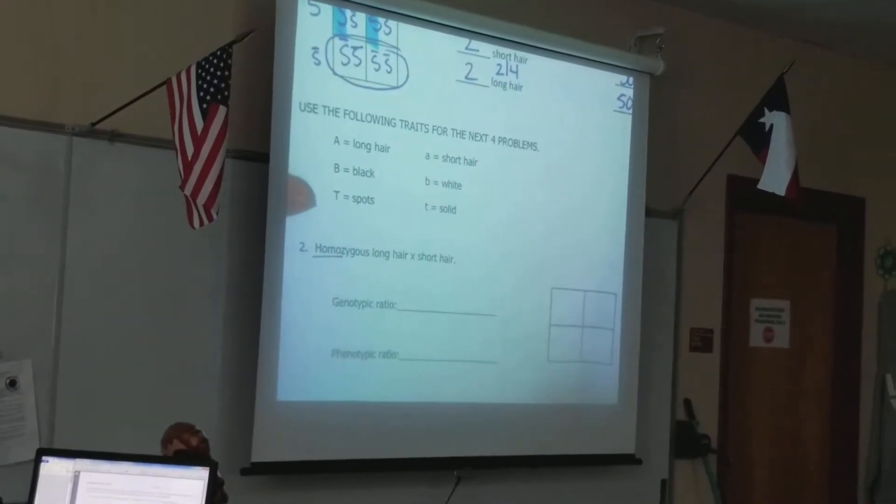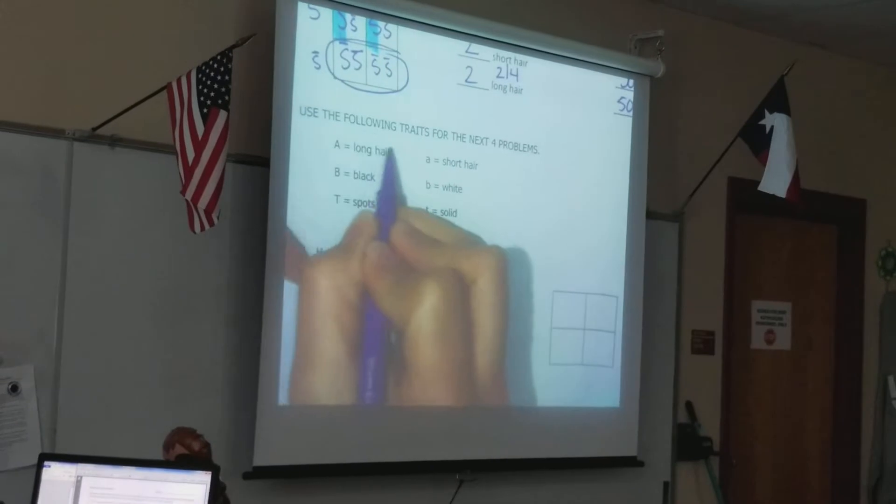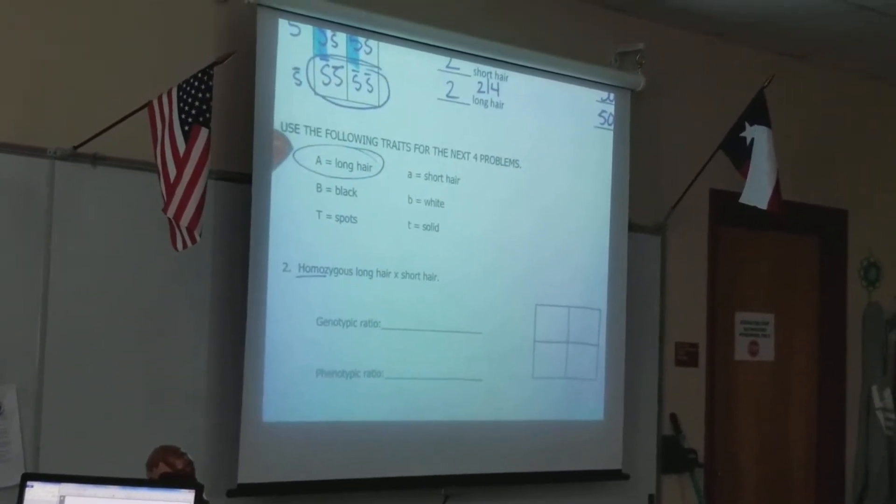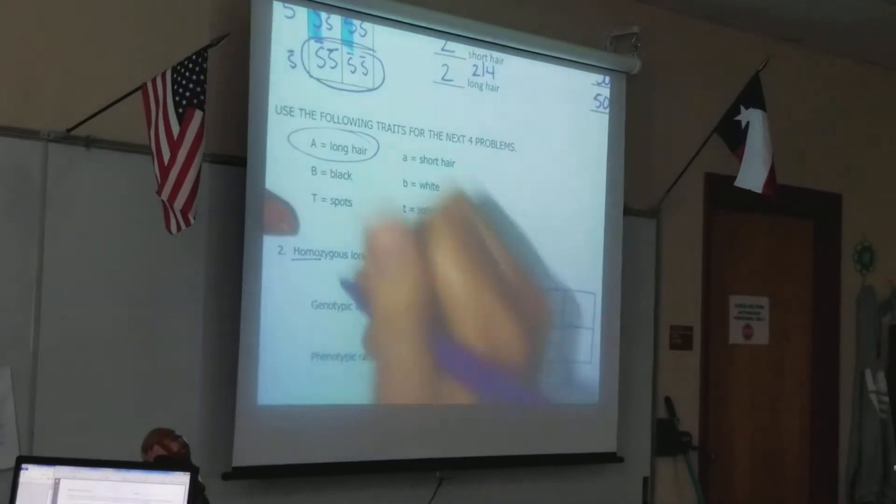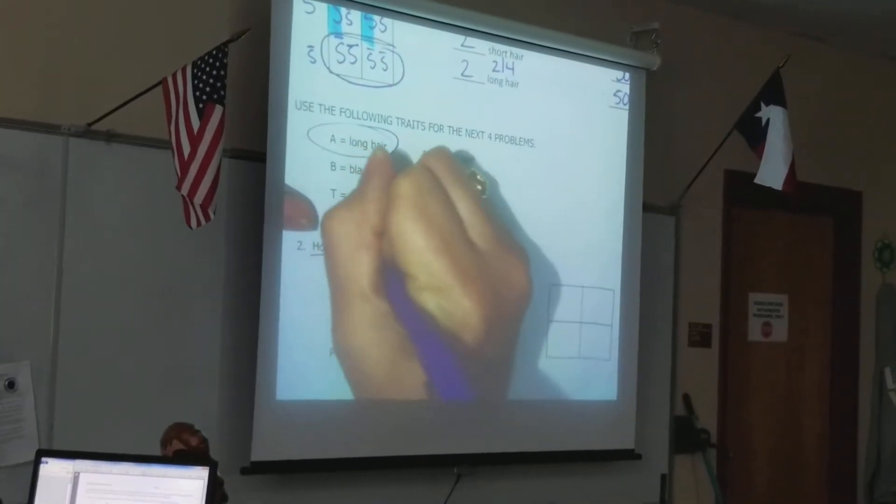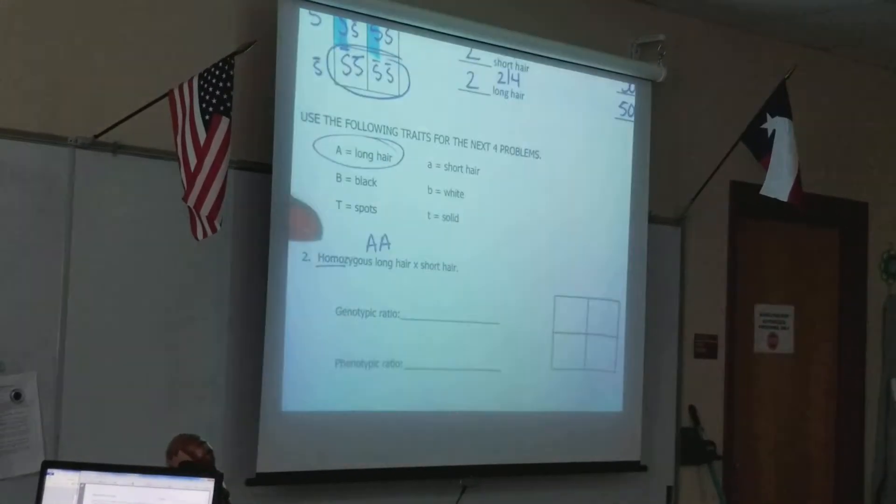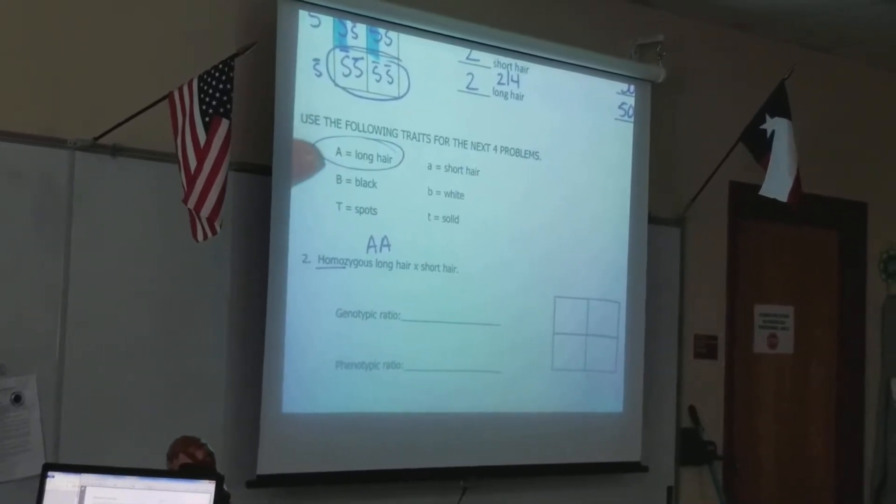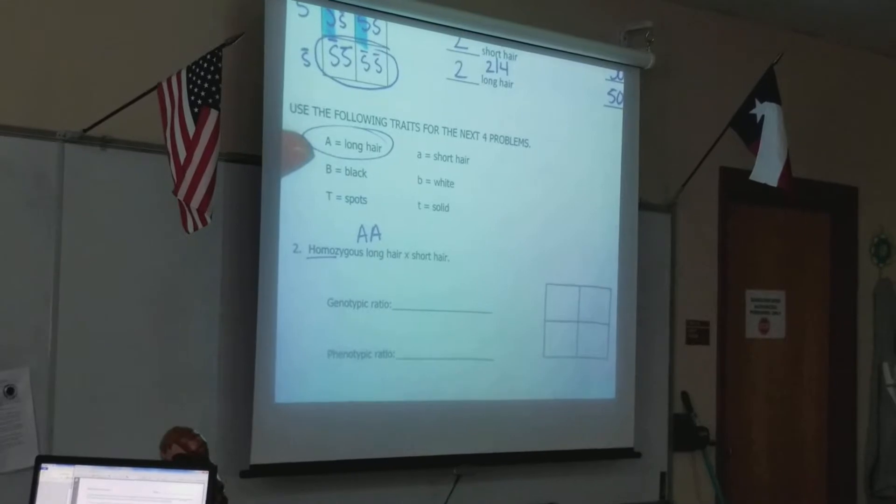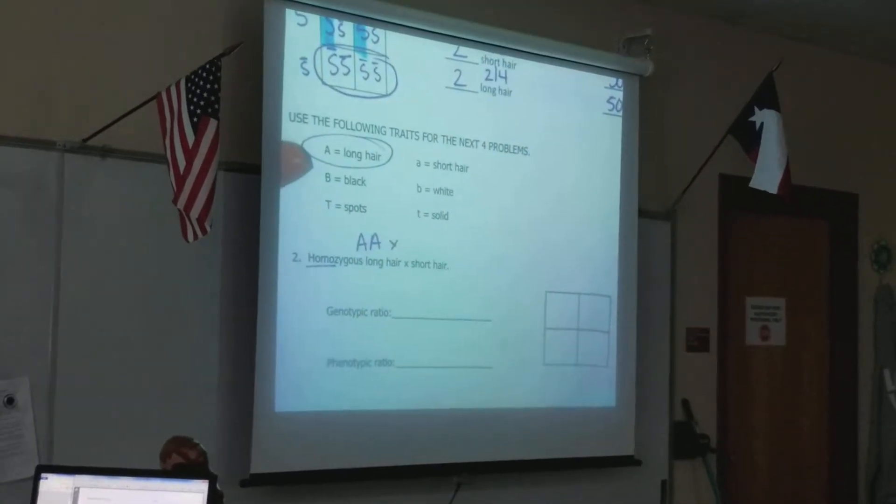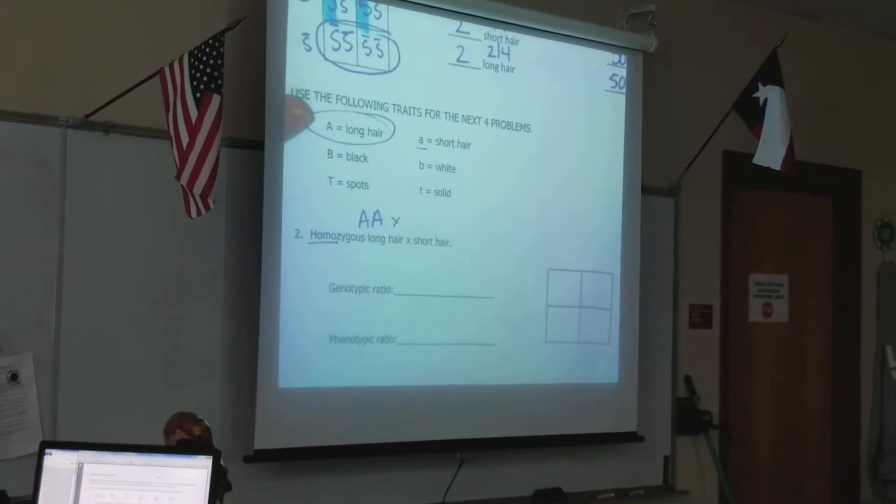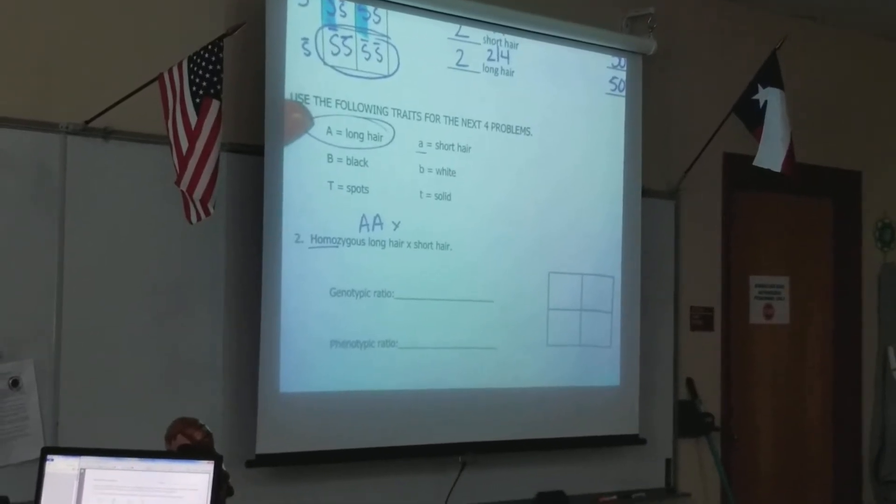So homo means what? Same. If it's long hair and long hair is a capital letter, what do we know about long hair? It's dominant. So homozygous long hair is going to be both dominant alleles. Both are going to be capital letters. Then we're going to cross it with a short hair. Short is recessive. In order for a recessive trait to be expressed, both alleles must be present.